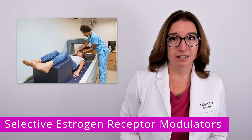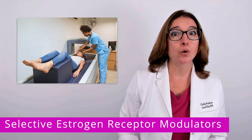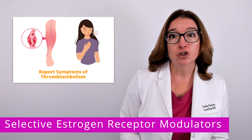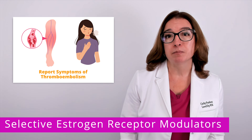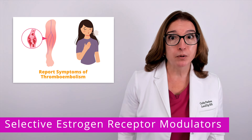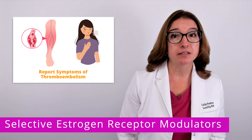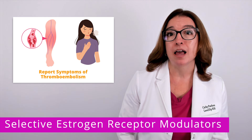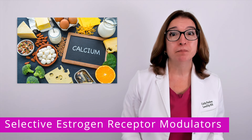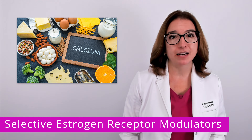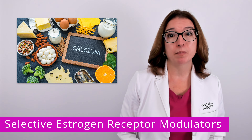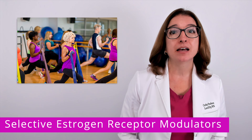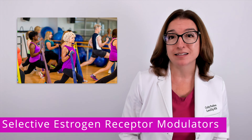During therapy with raloxifene, the patient's bone density should be monitored in order to evaluate treatment effectiveness. In terms of patient teaching, you should advise your patient to immediately report any signs and symptoms of a thromboembolism — for example, leg pain and swelling could indicate a DVT, and chest pain and shortness of breath could indicate a pulmonary embolism. It's also important that your patient maintain an adequate intake of calcium and vitamin D and take any supplements as ordered. You should also emphasize the importance of weight-bearing exercise to help stimulate bone formation and improve bone density.